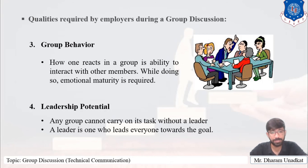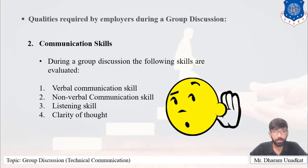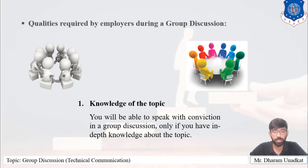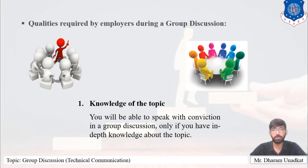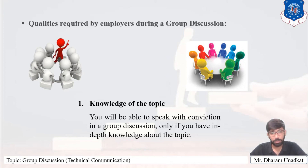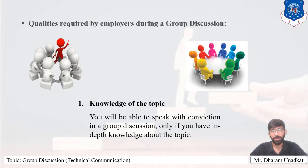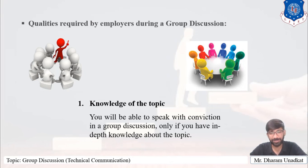So these are the four main qualities observed by the panelists: knowledge of the topic, communication skills, group behavior, and leadership quality. Keep these four points in mind when participating in group discussion, where around 7 to 12 participants discuss a topic given by the panelists for around 10 to 40 minutes, varying by organization. More topics of module number 3, Technical Communication, will be discussed in upcoming videos. Thank you.